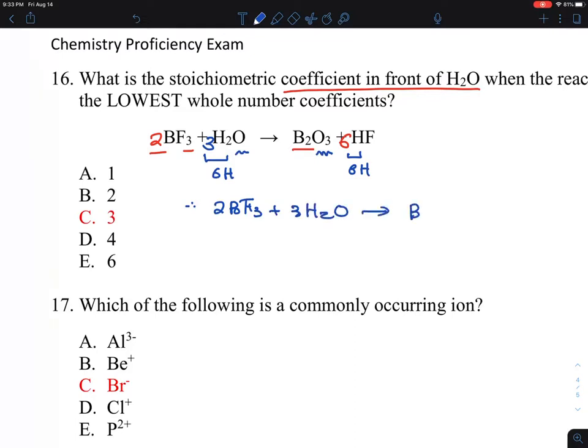Okay, and so B2O3, six HF. And then now you check the number of atoms here, once more, boron is balanced, fluoride is balanced, oxygen is balanced, and hydrogen is balanced. So therefore, the coefficient goes in front of H2O is number three.